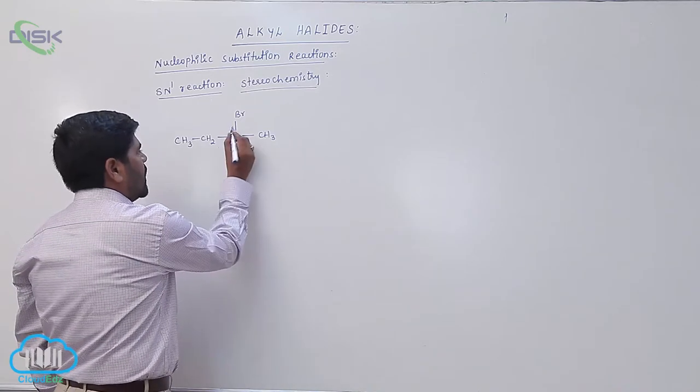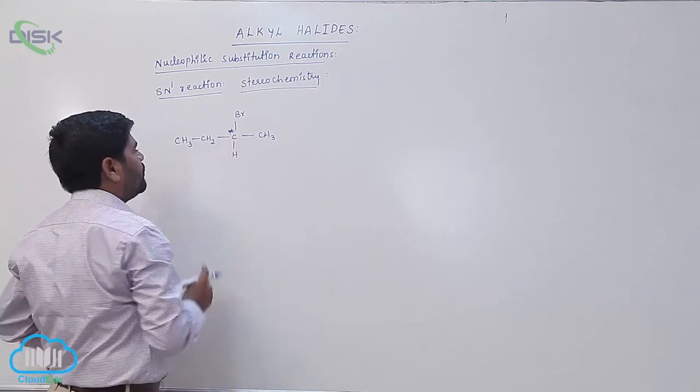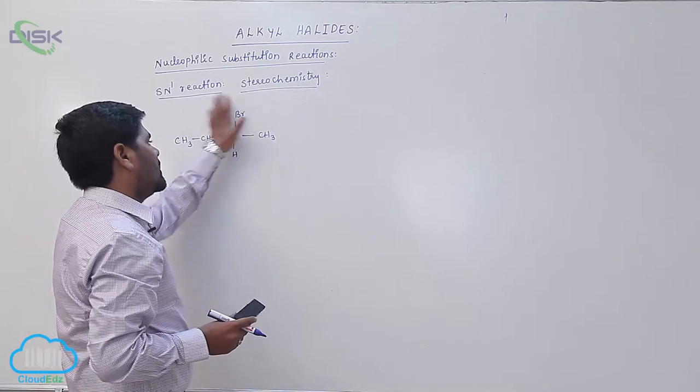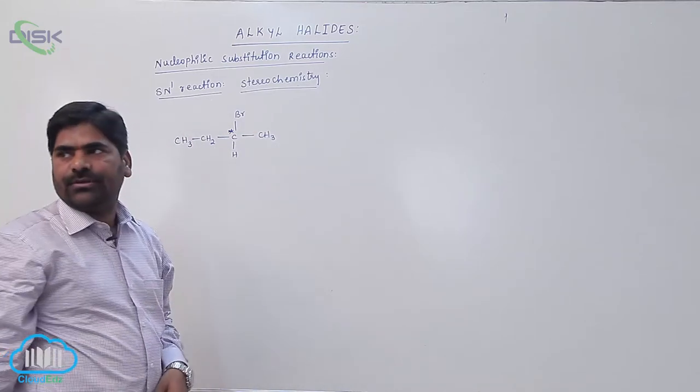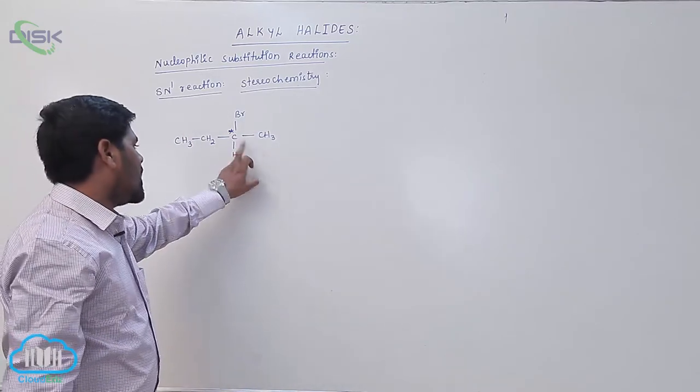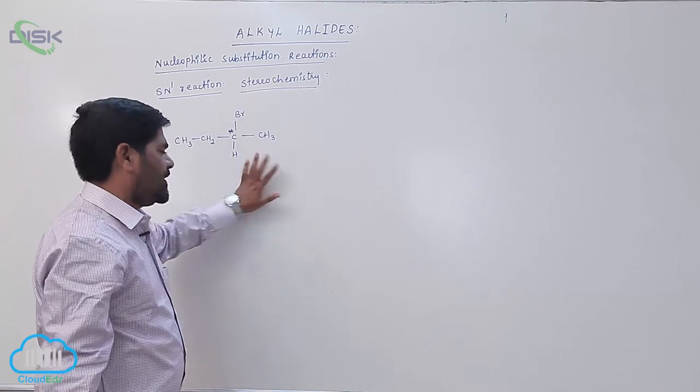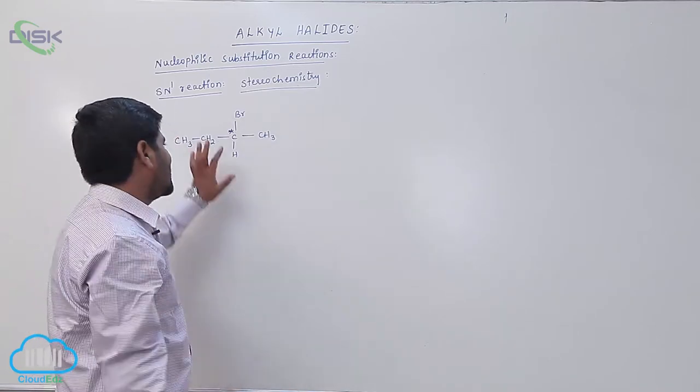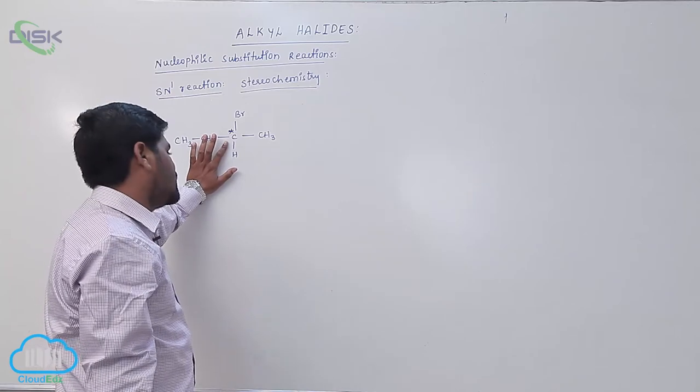Around the central carbon, four different groups are connected. So that is the reason why it is known as what?